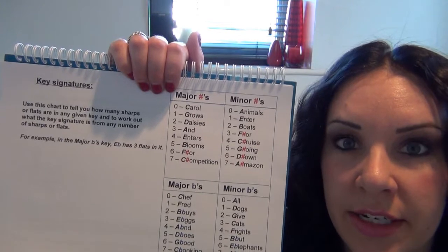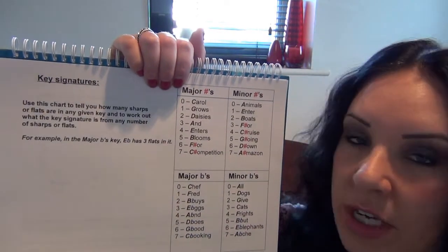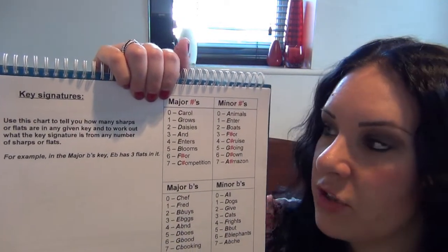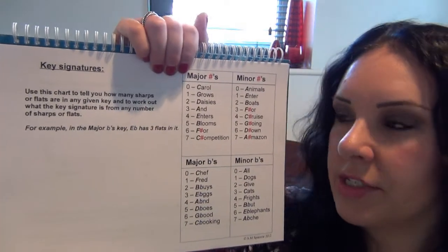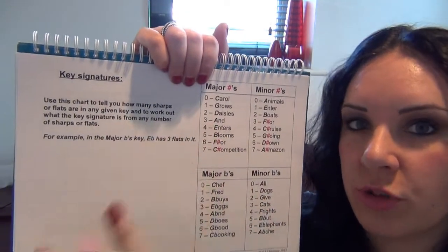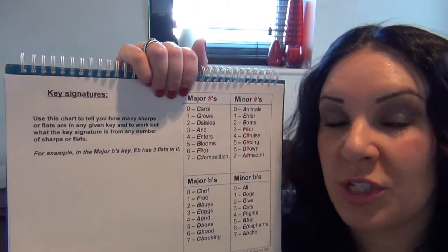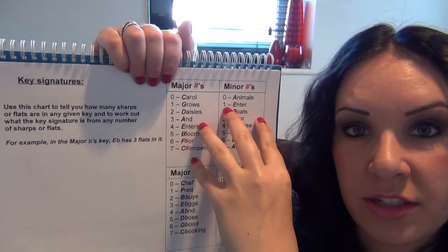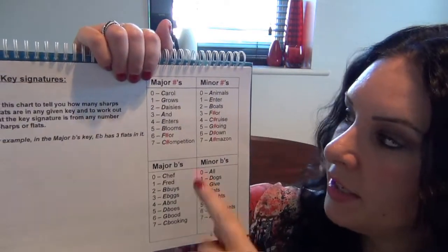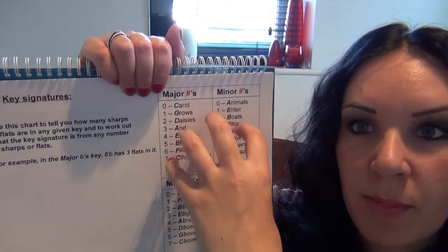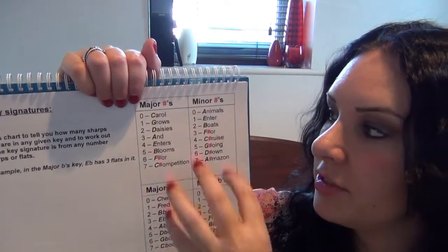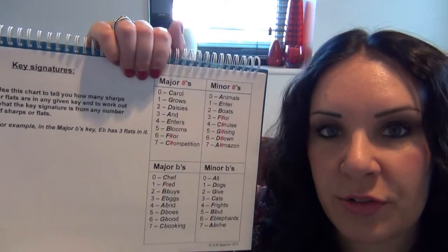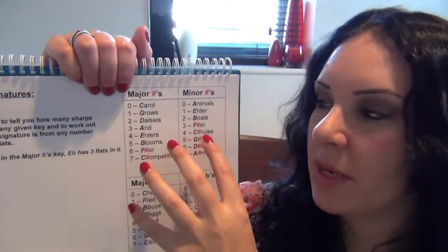So the next topic is key signatures. In the grade 3 theory book it does go on to teach you about certain types of major keys and minor keys, but I just feel it's easier to give you the whole knowledge to work out every single key — especially when you come up to grade 5 theory. It's very simple to learn. All you need is this chart here and that's it — you're well away. If you can memorise this chart — write it out again and again — that's why you've got the mnemonics: 'Cowl grows daisies and enters balloons for competitions.'